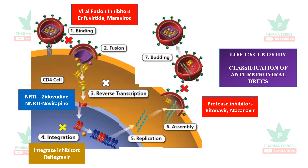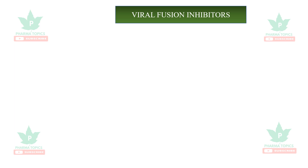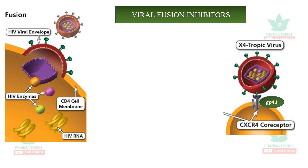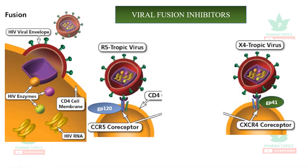Looking at viral fusion inhibitors individually: the HIV viral envelope fuses with the host CD4 cells, releasing its contents — HIV RNA and HIV enzymes — from the CD4 cell membrane. The viral fusion inhibitors block the viral fusion protein gp41 with its co-receptor CXCR4.